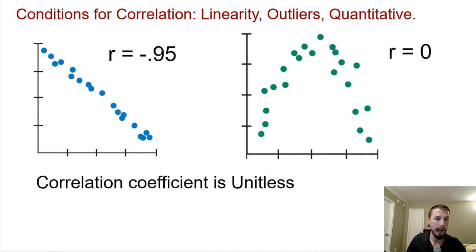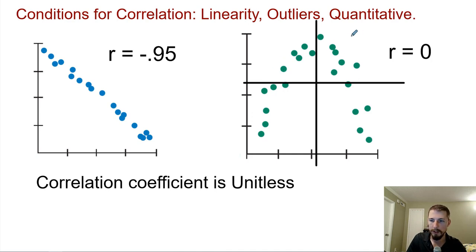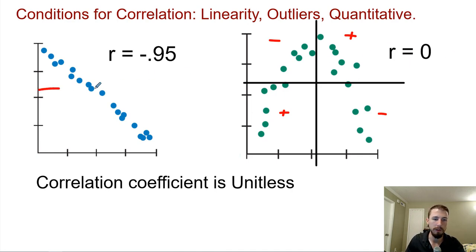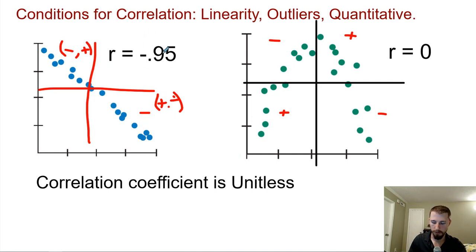As a hint for tomorrow, we calculate r based on Z-scores. What ends up happening is the products of positive Z-scores in one quadrant and positive in another end up canceling each other out for the curved case, giving a correlation near zero. For a truly negative linear association, all the products of Z-scores will be negative, which is what makes r close to a negative value.